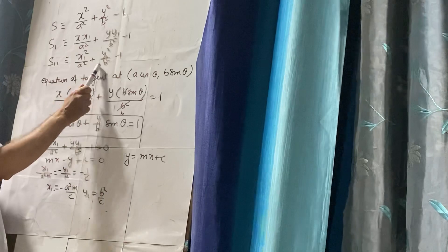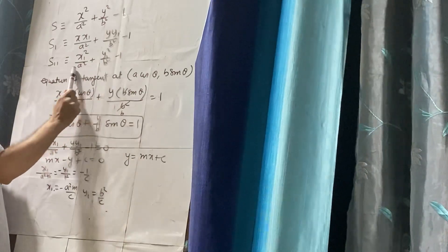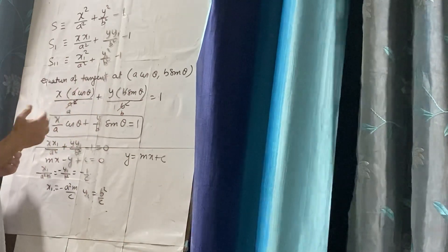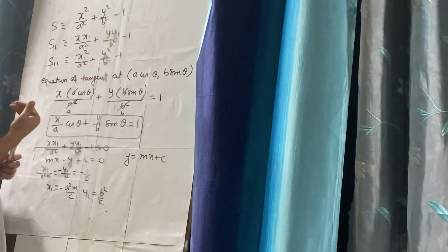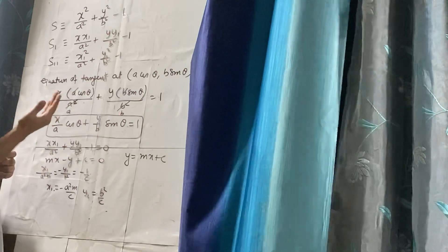From S11, we determine the position of a point with respect to the ellipse. If S11 is positive, the point is outside the ellipse. If S11 is negative, the point is inside the ellipse. And if S11 is 0, the point is on the ellipse.